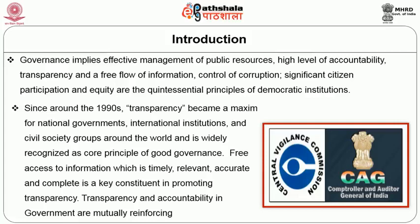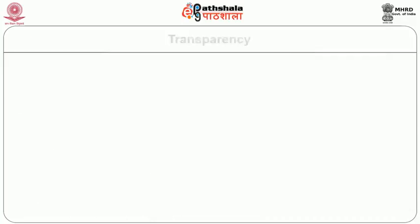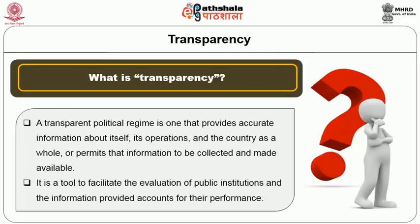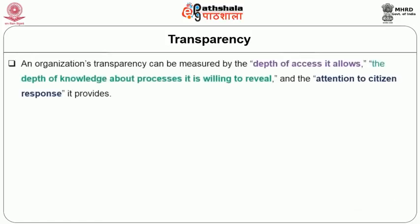Free access to information which is timely, relevant, accurate and complete is a key constituent in promoting transparency. Transparency and accountability in government are mutually reinforcing. A transparent political regime is one that provides accurate information about itself, its operations and the country as a whole, or permits that information to be collected and made available. Transparency is a tool to facilitate the evaluation of public institutions, and an organization's transparency can be measured by the depth of access it allows, the depth of knowledge about processes it is willing to reveal, and the attention to citizen response it provides.